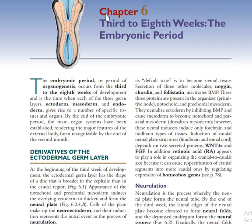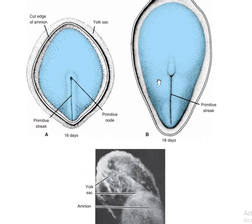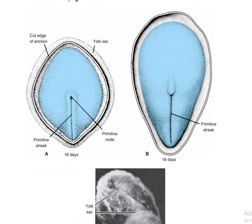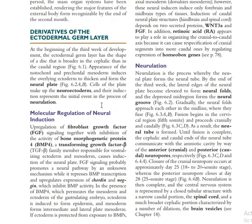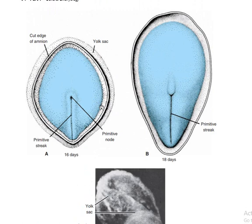Now, the third to eighth week is the embryonic period. During this period you have neurulation and gastrulation. Gastrulation is the formation of the definitive somites. Neurulation is the formation of the notochord and the neural plate.